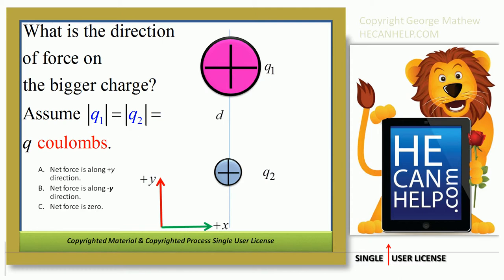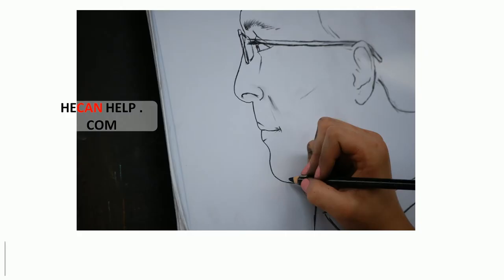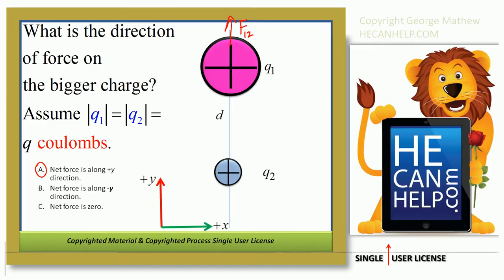What is the force on Q1 due to Q2? What happens to Q1? Q1 gets repelled by Q2. Q1 is positive, Q2 is positive and the force is along positive Y. So the answer is A.